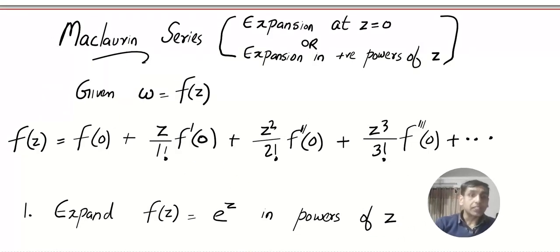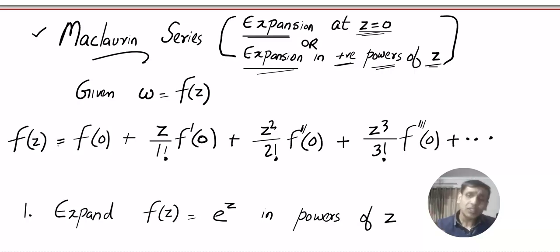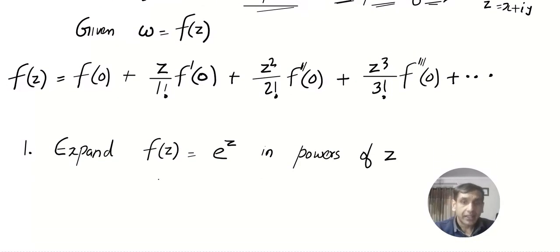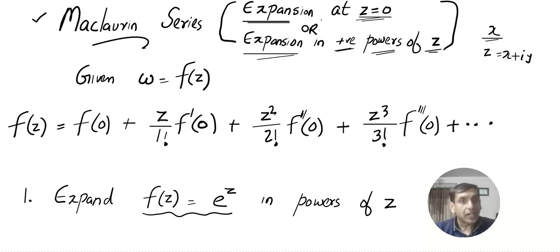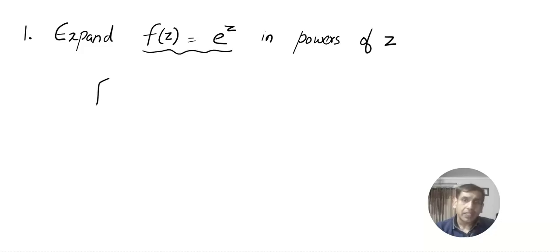McLaurin series is also called expansion at z equal to zero, or expansion in positive powers of z. You have already learned McLaurin series for real-valued functions and this is somewhat similar — the difference is that x is a real number and z is a complex number. If they ask you to expand at z equal to zero or expand in positive powers of z, you understand it is McLaurin.